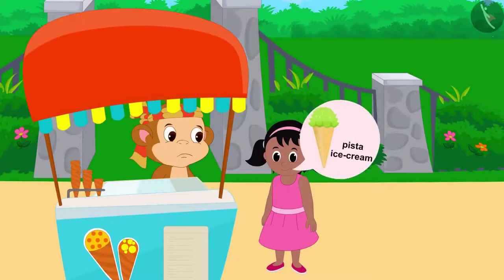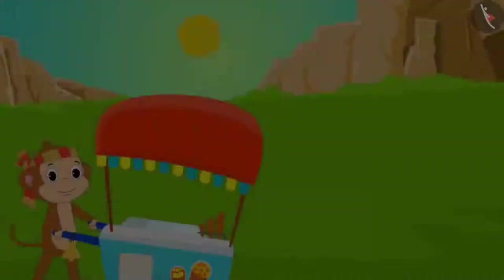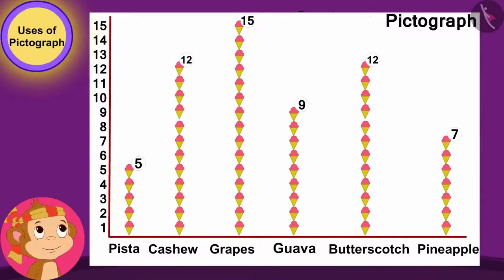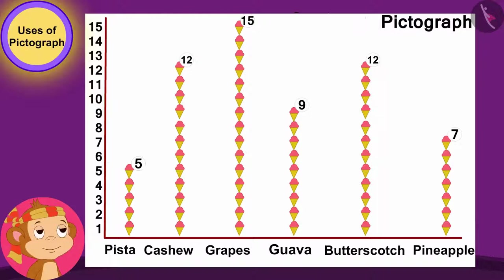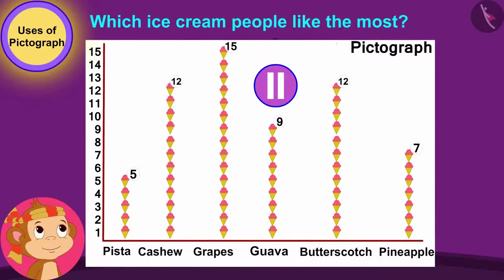He asked every customer visiting his stall the name of the ice cream they liked and showed the choices of each customer by making a symbol of an ice cream cone. For example, Pinky loves Pista ice cream the most, so Babban drew an ice cream cone above Pista ice cream's name. The day was over and Babban's pictograph was complete. Children, can you see the pictograph made by Babban and tell which ice cream people like the most?